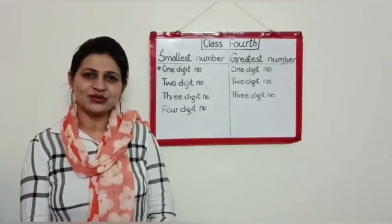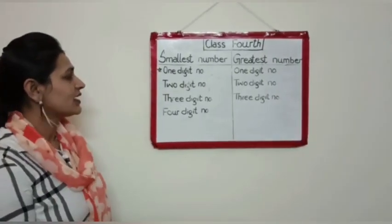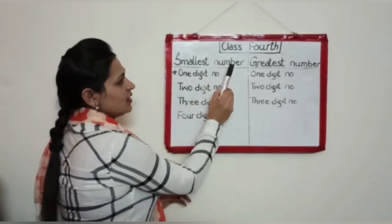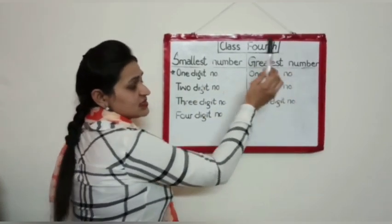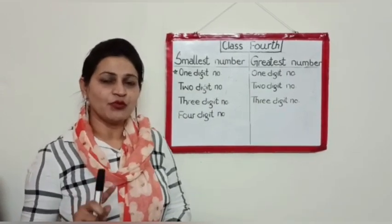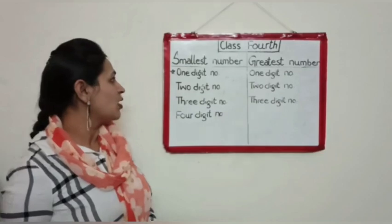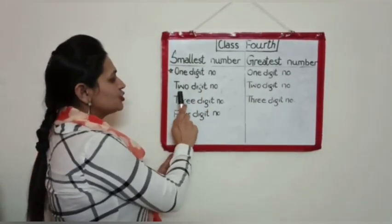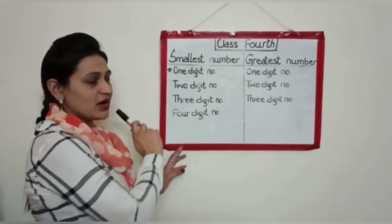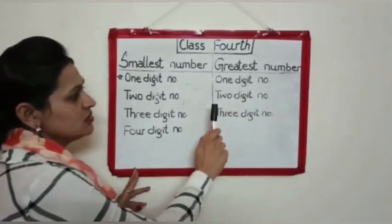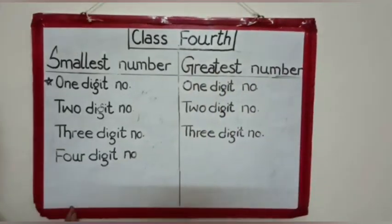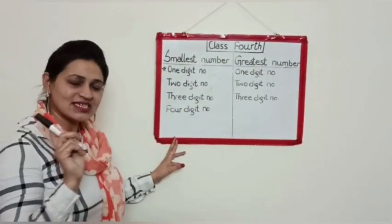Hello students, how are you? Today's class is Class 4th: smallest number and greatest number. Students, you have already learnt how to read numbers. Today we are going to learn about 1-digit, 2-digit, 3-digit, and 4-digit smallest numbers, and 1-digit, 2-digit, and 3-digit greatest numbers with the help of an abacus. So let's start, students.